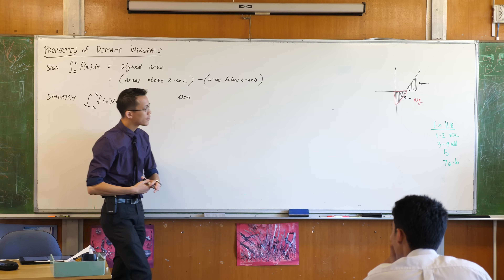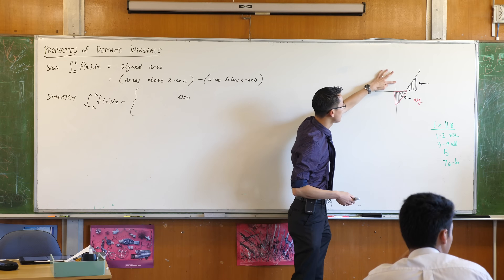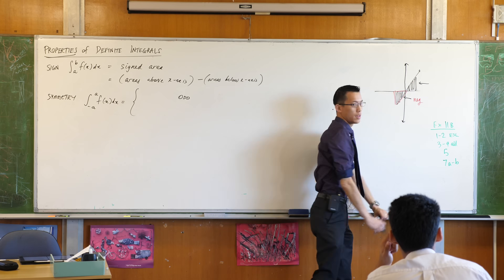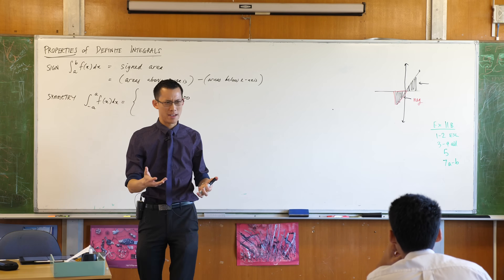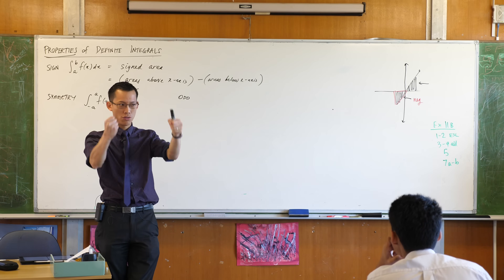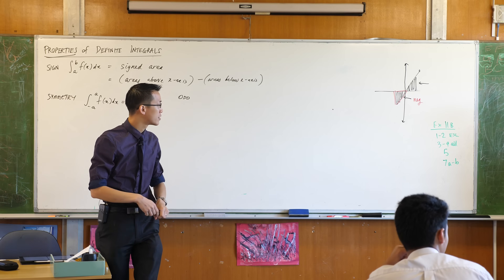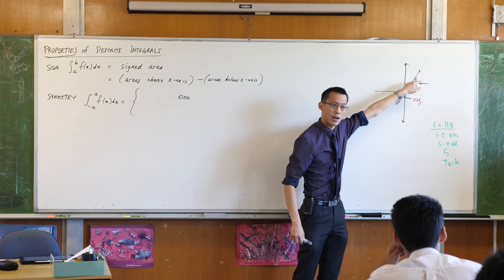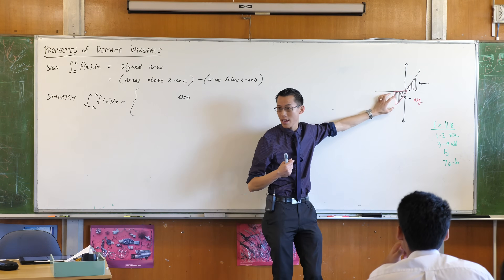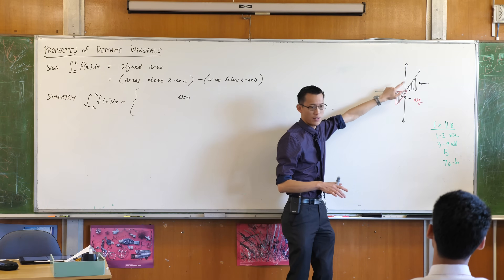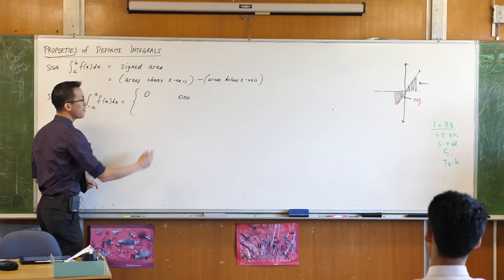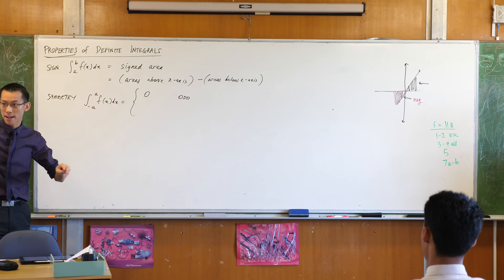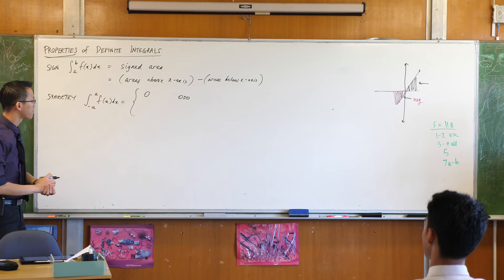What does it mean to be an odd function? It has rotational symmetry — you rotate it across the origin, or you can say across the line y equals x. Because you've got an odd function, this positive area over here has to be exactly the same as the negative area. But positive and negative — what do they equal? Zero. So if you have an odd function with symmetrical boundaries, you just get zero. The parts on the left-hand side and the parts on the right-hand side just cancel.